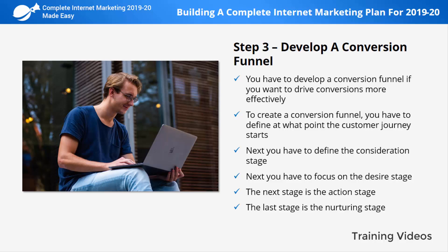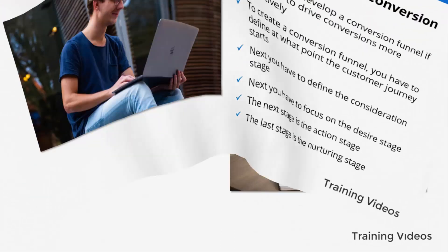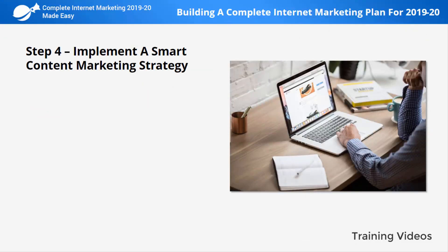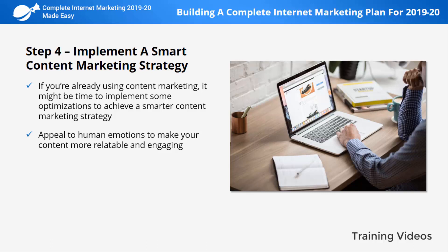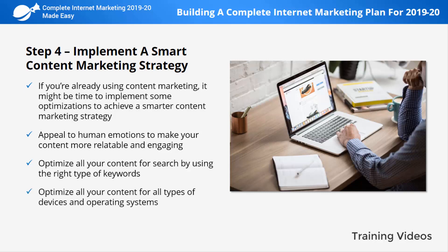Step number four: implement a smart content marketing strategy. If you're already using content marketing, it might be time to implement some optimizations. Whether it's video, articles, or visual discovery, some key elements to enhance your content are: appeal to human emotions to make your content more relatable and engaging — use humor, drama, and nostalgia to hit your audience's core emotions. Optimize all your content for search by using the right keywords, and optimize it for all types of devices and operating systems.